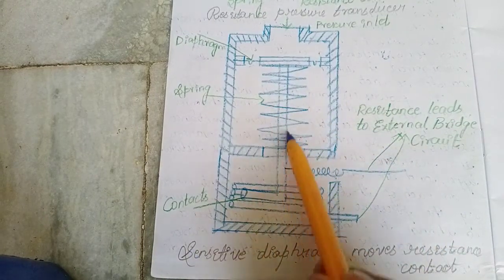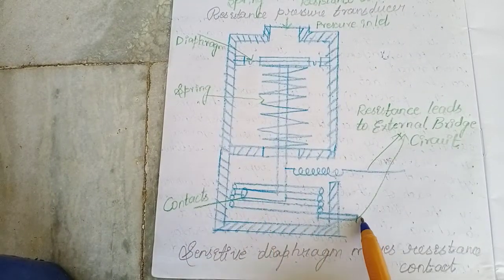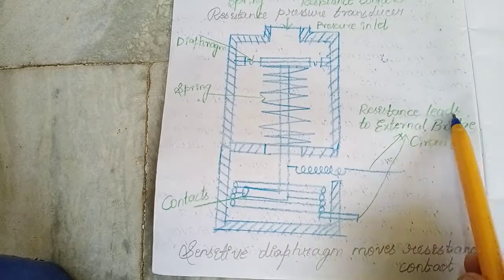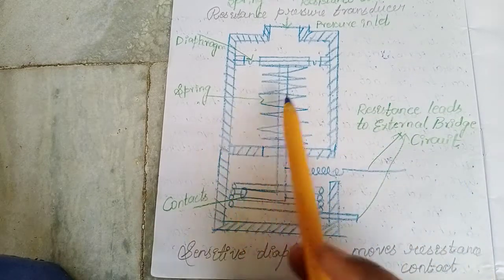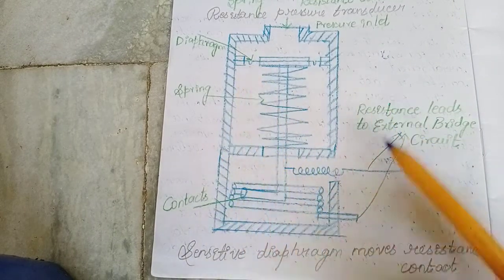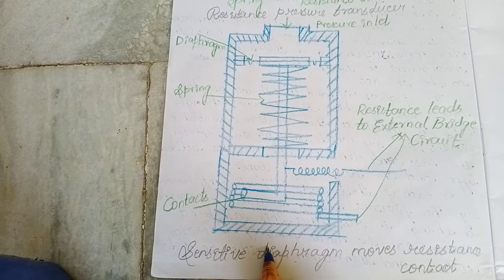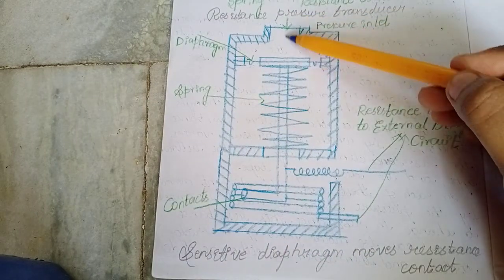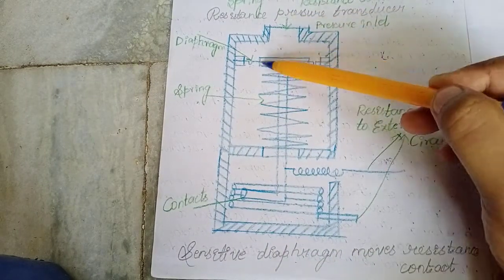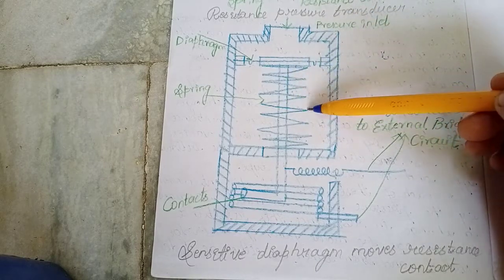There are resistance contacts here, which are used to connect to the external bridge circuit. The pressure from the inlet impacts on the diaphragm, and as the sensitive diaphragm moves, the resistance also changes. This movement of the diaphragm causes movement in the spring, which affects the resistance of the spring.